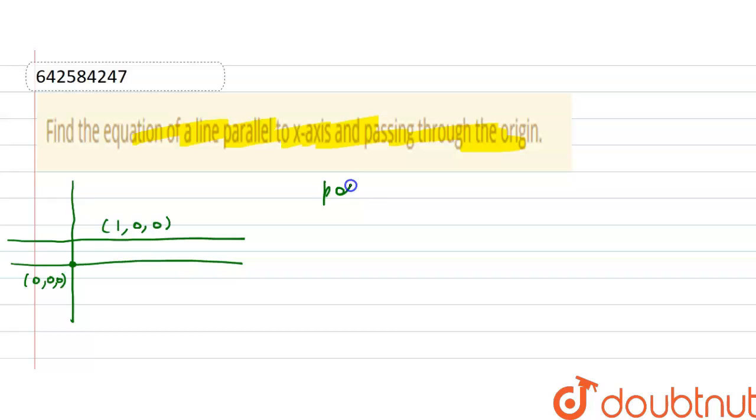So position vector is equal to points (0, 0, 0) passing through the origin. So we can write in vector form 0·i-cap plus 0·j-cap plus 0·k-cap.